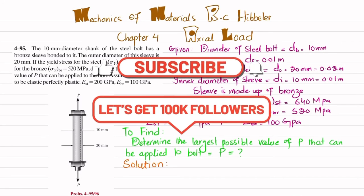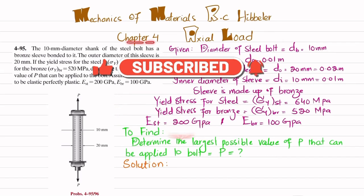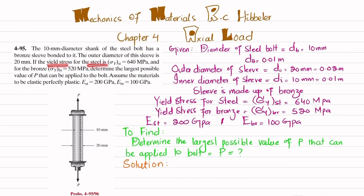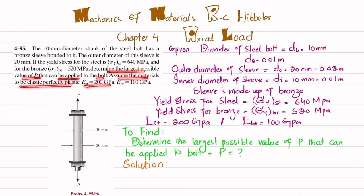Welcome back. In this video we are going to solve problem 4-95, taken from chapter 4, Axial Load, from the book Mechanics of Materials by R.C. Hibbeler. The statement is: the 10 millimeter diameter shank of a steel bolt has a bronze sleeve bonded to it. The outer diameter of this sleeve is 20 millimeter. The yield strength for steel is 640 MPa and for bronze is 520 MPa. Determine the largest possible value of P. Assume the material is elastic perfectly plastic. The modulus of elasticity for steel is 200 GPa and for bronze it is 100 GPa.